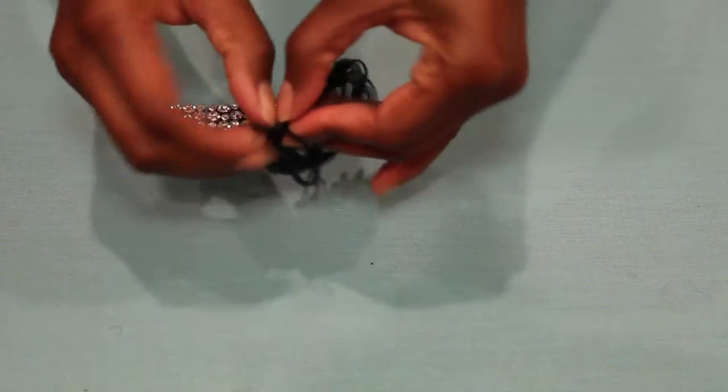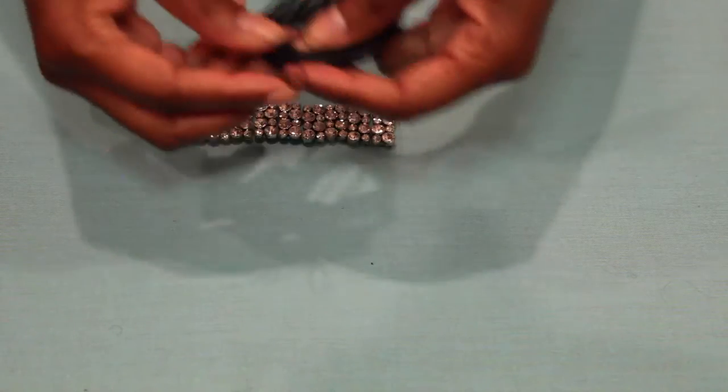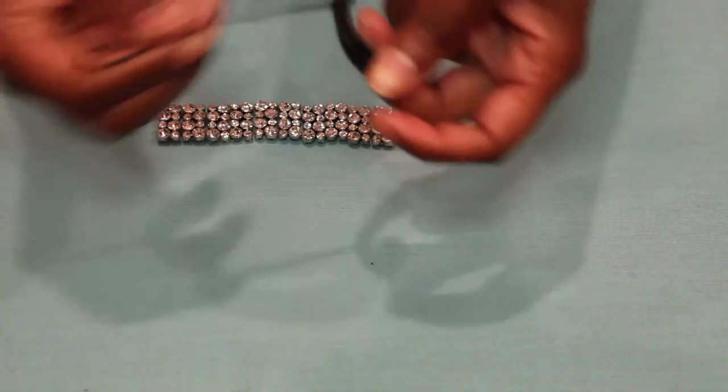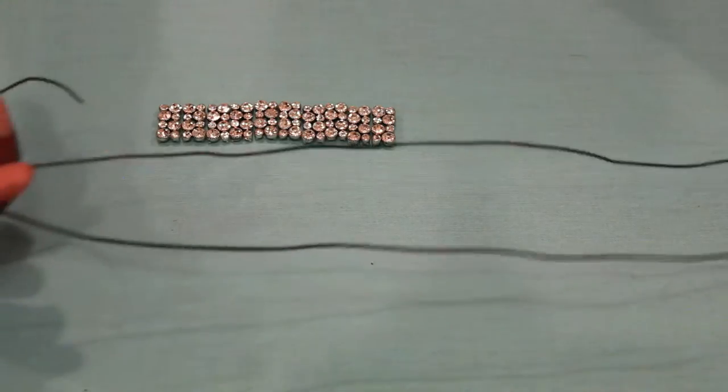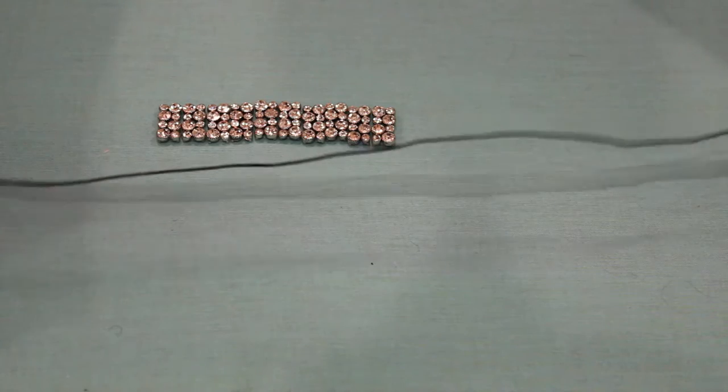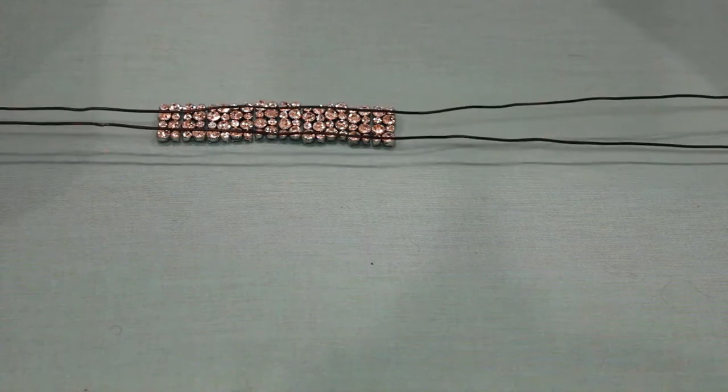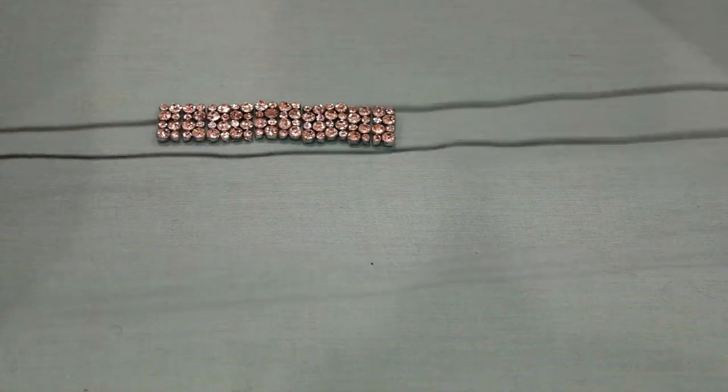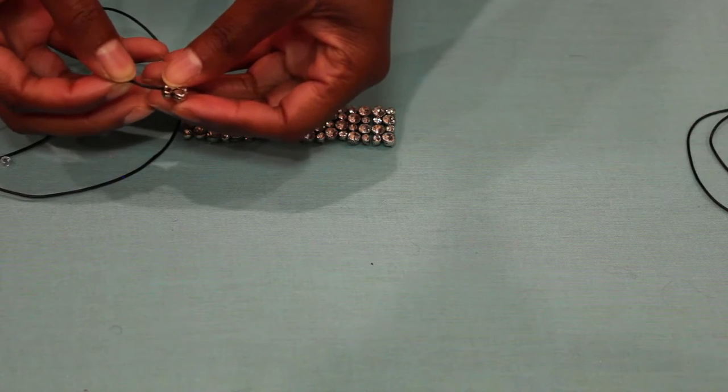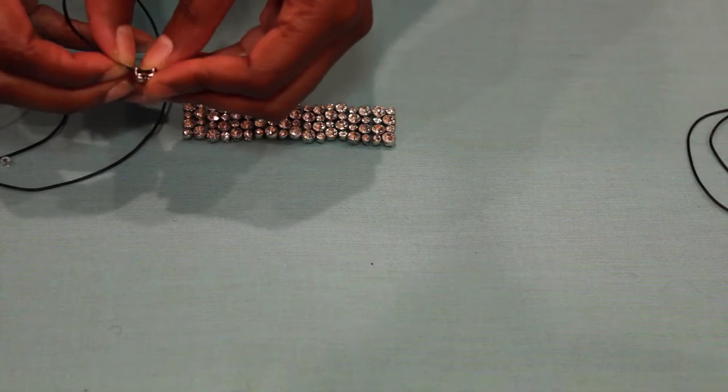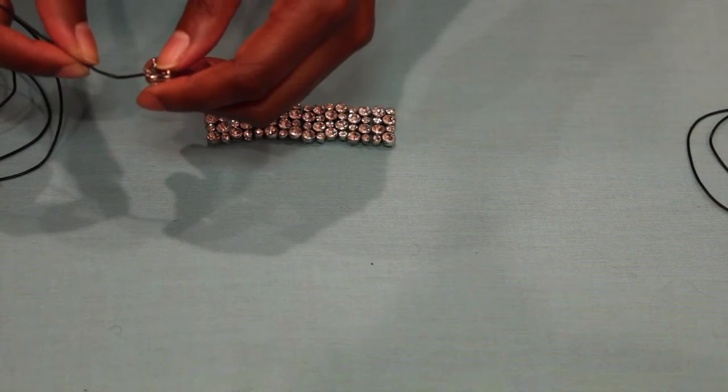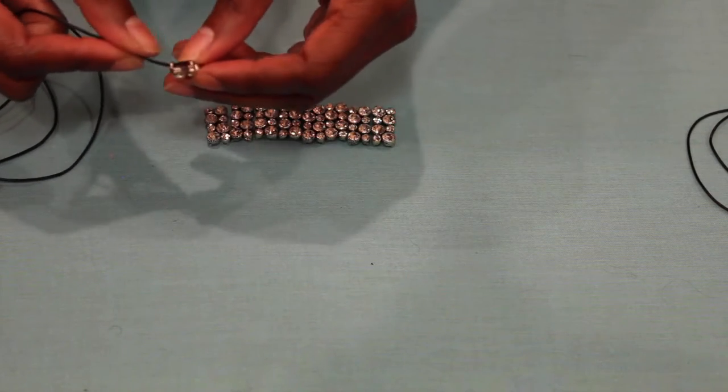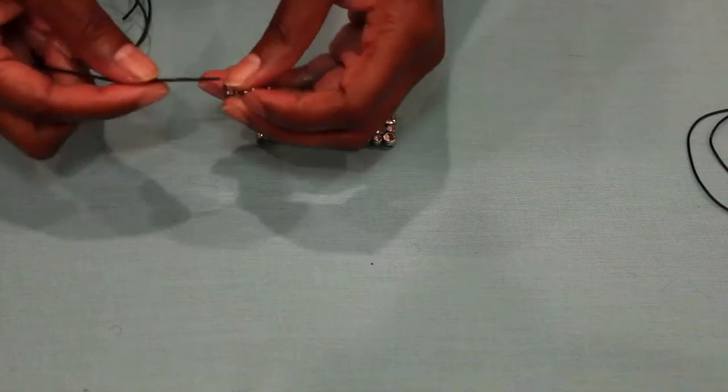Once you are done opening both packs, what you're going to want to do is take your cording. I'm going to take the raw ends of the cord, so the two ends that are cut basically, and I'm going to stretch my cording out so that it fits around my neck as well as has some space on the ends because we are going to tie a knot when we're done, or basically like a bow.